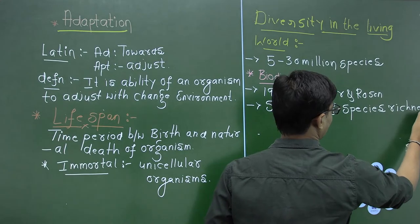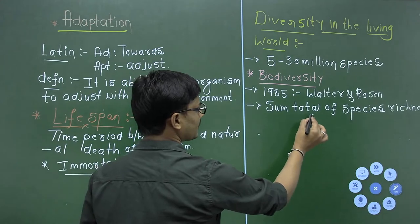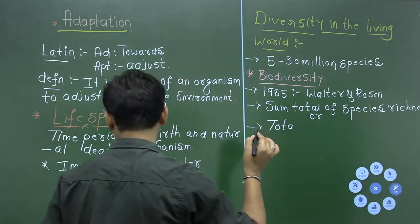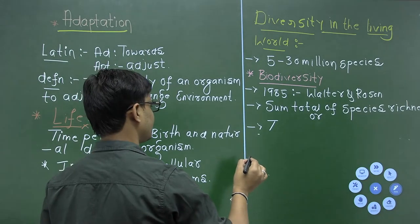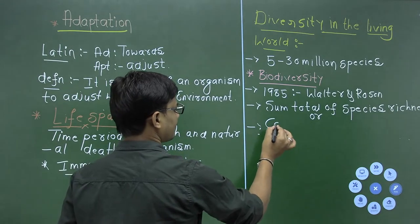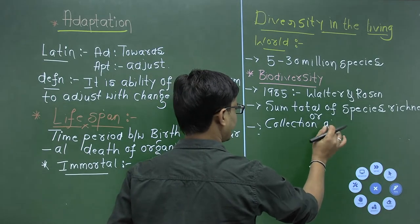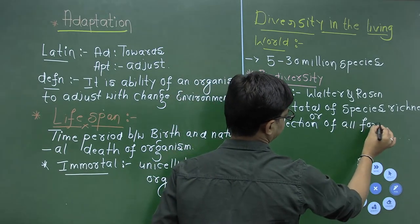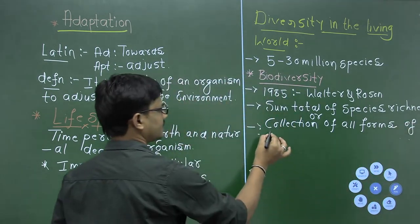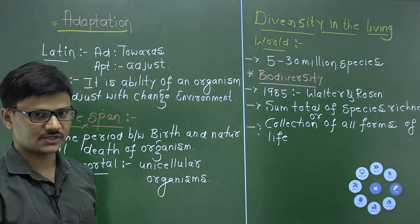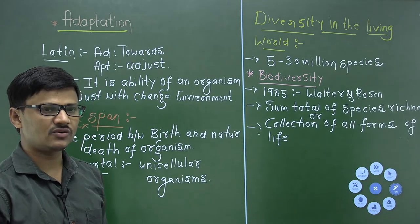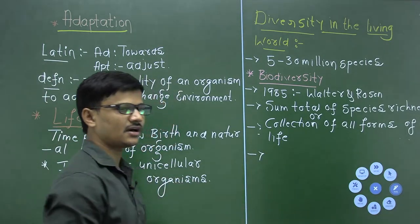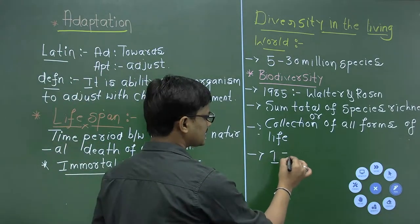Sum total of species richness is called biodiversity. You can also define it as a collection of all forms of life. Scientists have studied many species and till today they are able to describe nearly 1.7 million species.